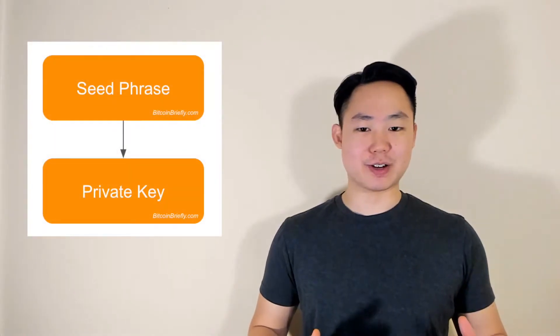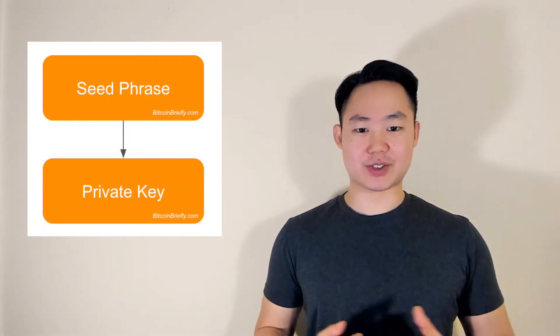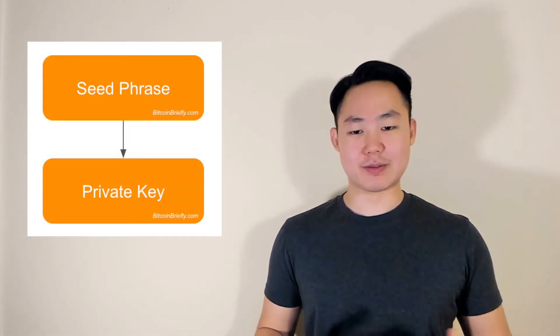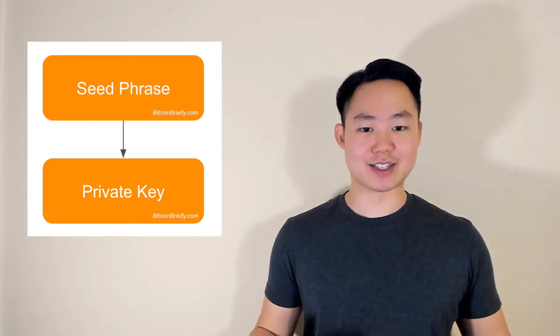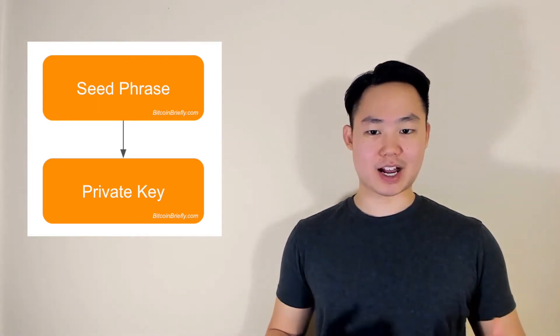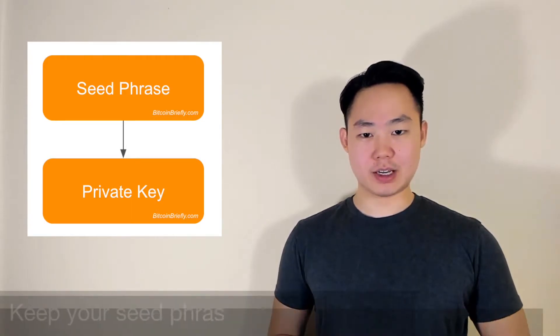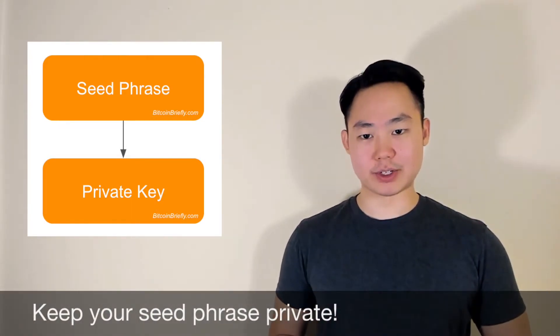So how are seed phrases and private keys used within wallets? Well, your wallet applies cryptography to your seed phrase in order to derive your private key. Once your wallet extracts your private key from your seed phrase, it can then access and spend your Bitcoin. Now because your seed phrase practically acts as your private key, you need to keep your seed phrase private as well.